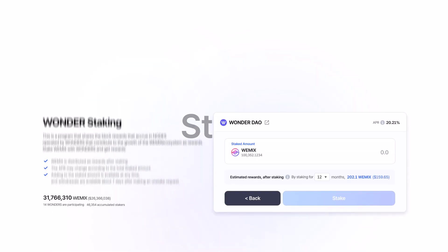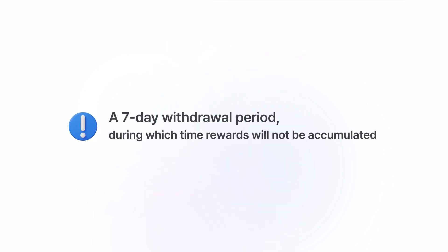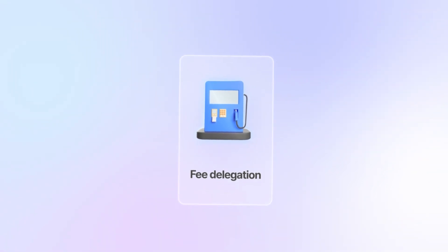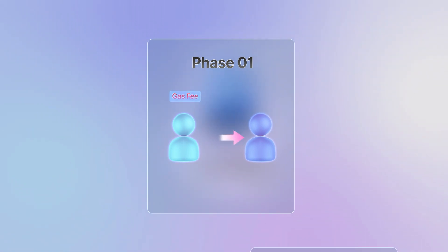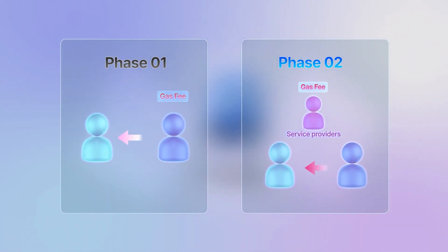In our pursuit of fostering a user-friendly environment towards the expansion of the community, several features will be implemented. First, wonderstaking offers great autonomy to stakers by allowing both staking and unstaking to be processed freely. Please note that during the unstaking process, there will be a 7-day withdrawal period where Wemix will be locked and rewards will not be accumulated. Additionally, to support the mass adoption of blockchain services, fee delegation will be implemented, allowing specific service providers to pay the gas fees on behalf of users.